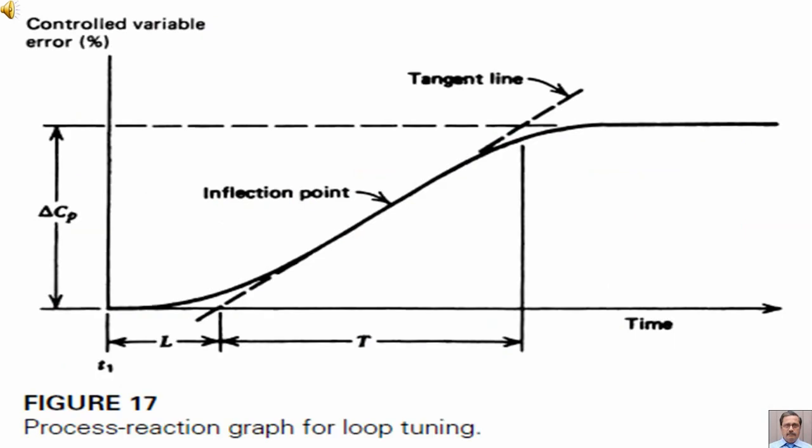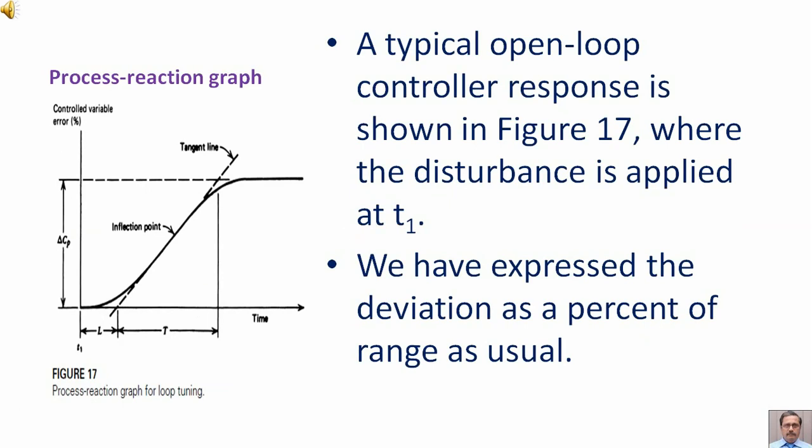Figure 17: Process Reaction Graph for Loop Tuning. A typical open loop controller response is shown in Figure 17 where the disturbance is applied at T1. We have expressed the deviation as a percent of range as usual.